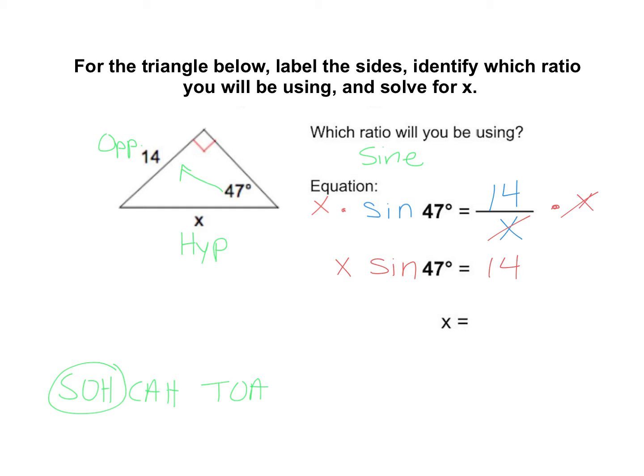Now, to undo that x times the sine of 47, we have to get rid of that sine 47, and that means we need to divide. These are held together by multiplication. To undo multiplication, we divide. So sine 47 degrees, like that.